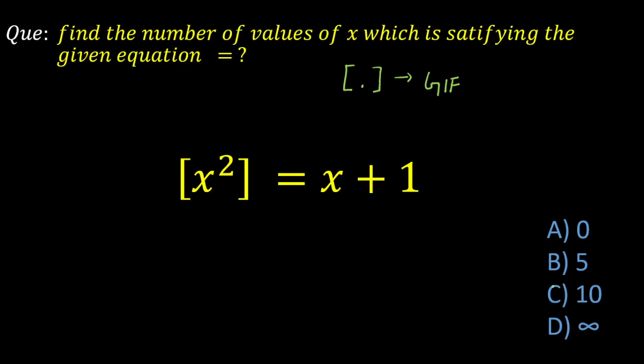Hello everyone. Today we're going to look at a problem from KVPY 2021. The problem is to find all real values of x for which this equation is satisfied. The given equation is [x²] = x + 1, where the big bracket is the greatest integer function of x². We have to find all real values of x for which this equation is satisfied.